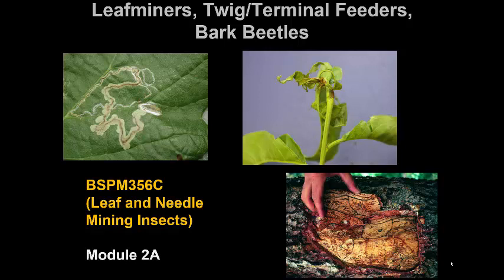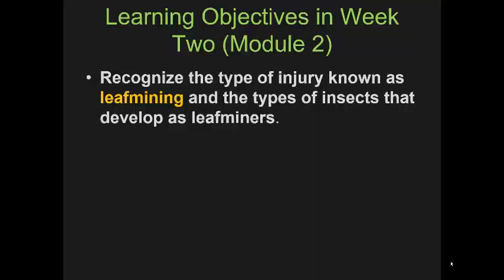This week we're going to talk about some insects that move into the plant and damage it internally, either the leaves, the twigs, terminal growth, or maybe even the trunks. I also want to bring up the concept of injury through the ovipositor, or the egg-laying organ of insects.